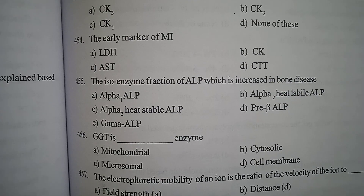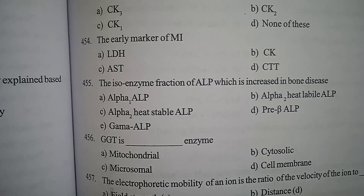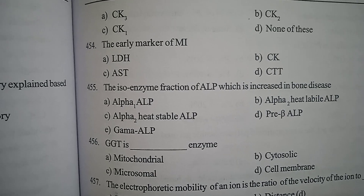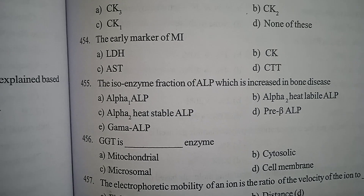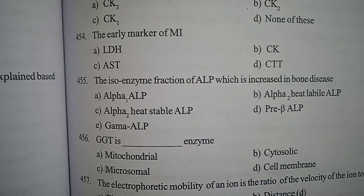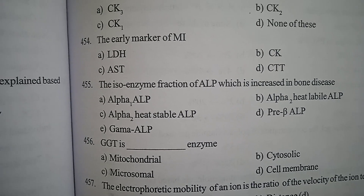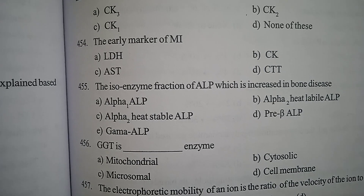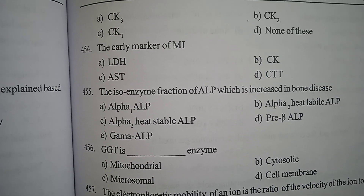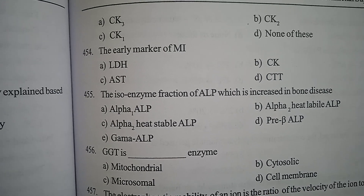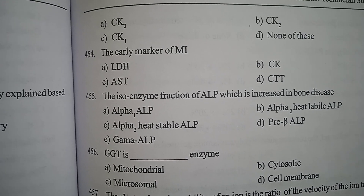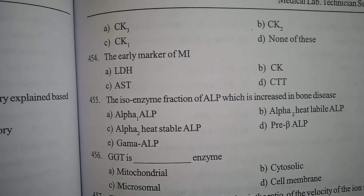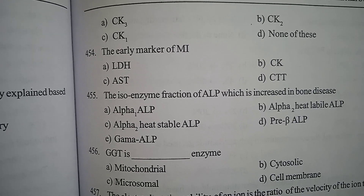Question 9: The early marker of MI (myocardial infarction) is — Option A: LDH, Option B: CK, Option C: AST, Option D: CTT. Correct answer: Option B, CK.